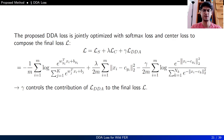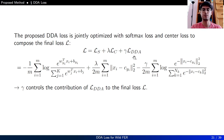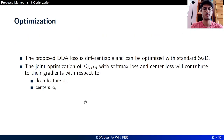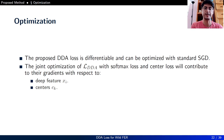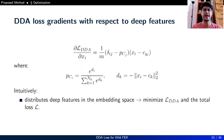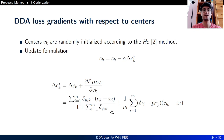The proposed DDA Loss is jointly optimized with softmax loss and center loss to create the total loss. The contribution of center loss is controlled by hyperparameter lambda, and the contribution of DDA Loss is controlled by hyperparameter gamma. DDA Loss is differentiable and can be optimized with standard stochastic gradient descent. The gradient of DDA Loss with respect to the deep features distributes them in the embedding space to minimize DDA Loss and the total loss. Centers are randomly initialized according to the He initialization method and updated using the provided update formula.